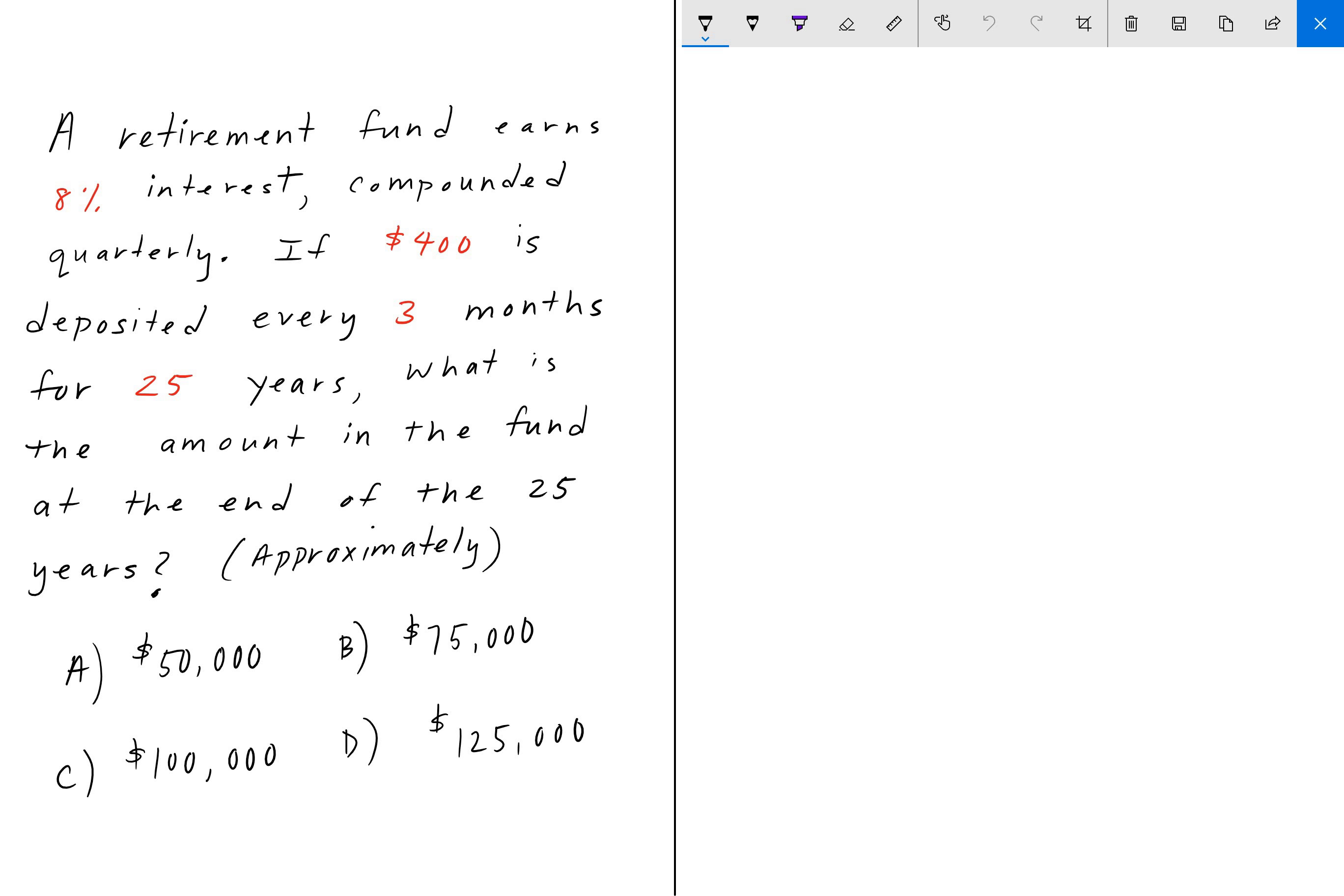Suppose that we have a retirement fund that earns 8% interest, compounded quarterly. If $400 is deposited every three months for 25 years, what is the approximate amount in the fund at the end of the 25 years? And here we're given one of four choices: either $50,000, $75,000, $100,000, or $125,000.